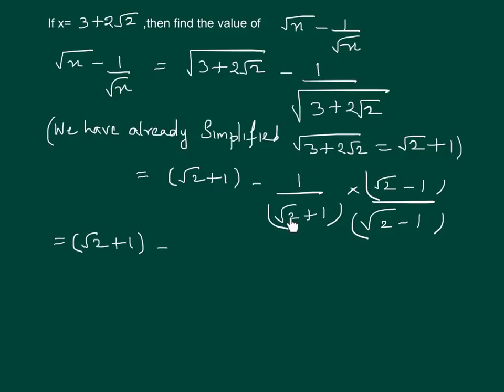In the denominator, the expression can be compared to the identity (a + b)(a - b). We know that (a + b)(a - b) = a² - b².